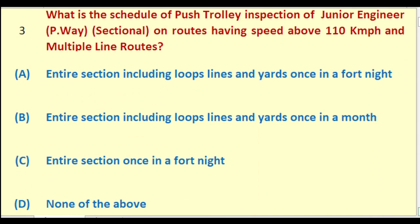What is the schedule of foot inspection of Junior Engineer Permanent Way Sectional on routes having speed above 110 kmph and multiple line routes? Options: entire section including loops, lines and yards once in a fortnight; entire section including loops, lines and yards once in a month; entire section once in a fortnight; none of the above. The right answer is: none of the above.